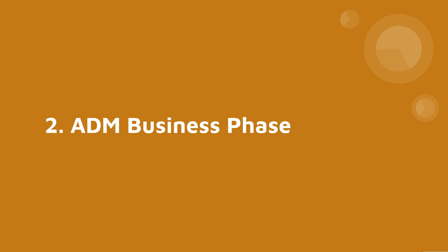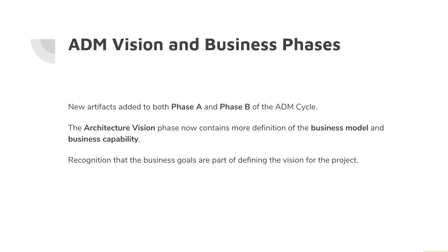The second difference between TOGAF 9.2 and TOGAF 9.1 is that they're making some changes to the way the business phases are handled. In TOGAF 9.1, you go into the Architecture Vision phase and come up with an architecture vision, but you're not really dealing with business problems. Now in the Architecture Vision phase they're adding things about the business model and defining business capability — new artifacts are being added to Phase A, basically pulling forward some business problem discussions from Phase B into Phase A.